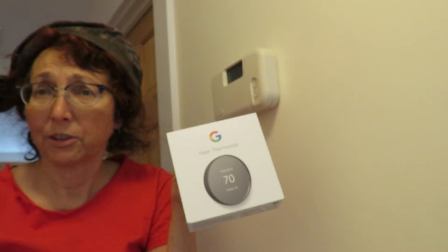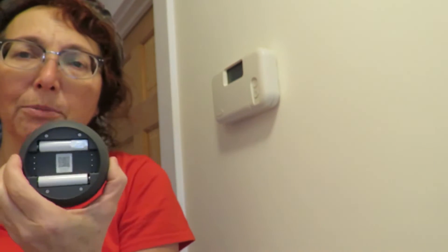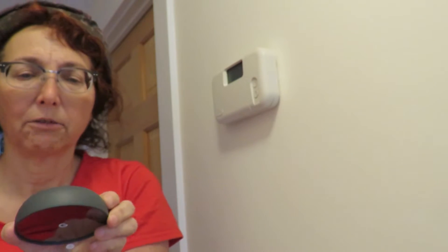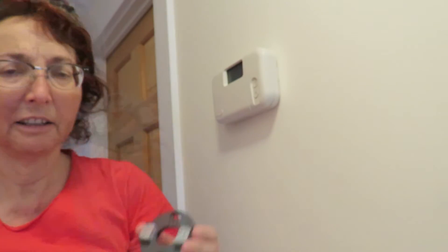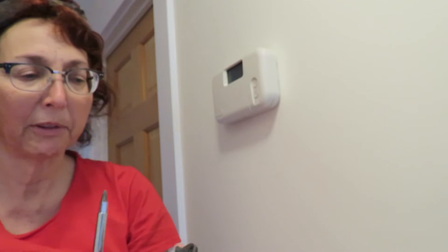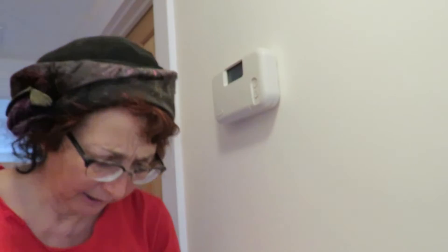In fact, our electric utility gave it to us for just $10 and change. It comes with two batteries that are rechargeable and get charged off the 24 volts that all thermostats have supplied to them. It comes with a little plate that gets installed with two screws, and there's also a bubble level to make sure that you have it leveled.